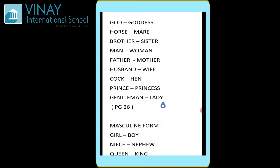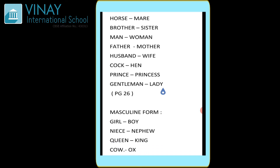Moving on — horse ka ho jaega mare. Feminine form is mare. Third is brother — behen, brother — sister. Man ka feminine form — woman. Father ka feminine form — mother, mummy. Husband — wife. Cock and hen — murga and murgi. Prince — princess. If I say in a castle there is a prince, toh prince ki ek princess hogi. Gentleman — lady. Gentleman is nothing but a polite way to call a man; same way lady is a polite way to call a woman. Toh gentleman ka feminine form ho jaega lady.